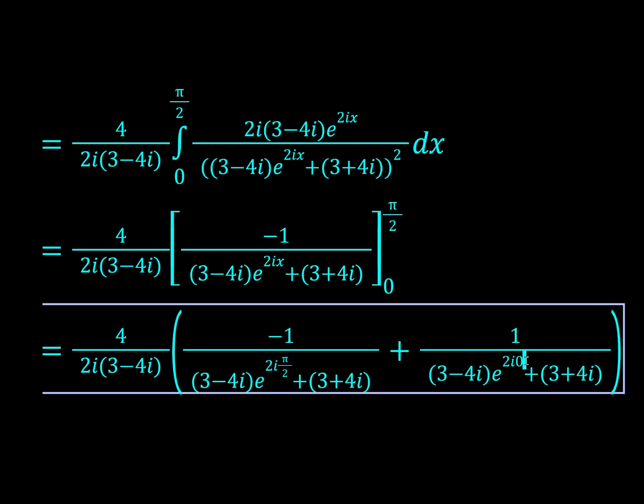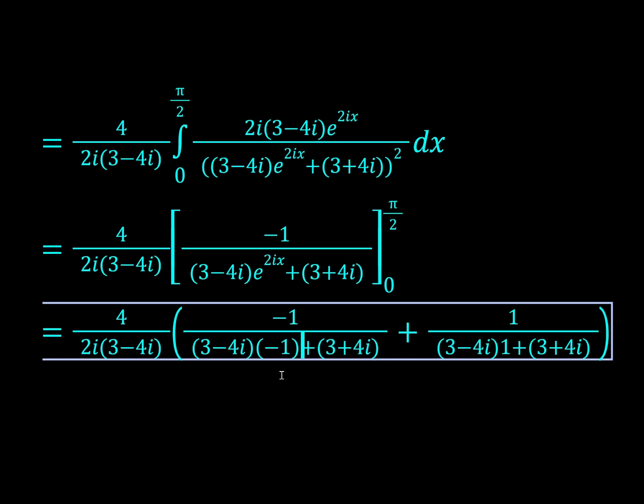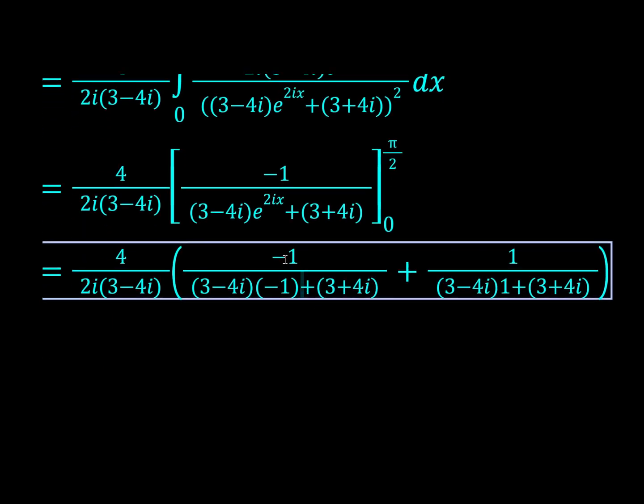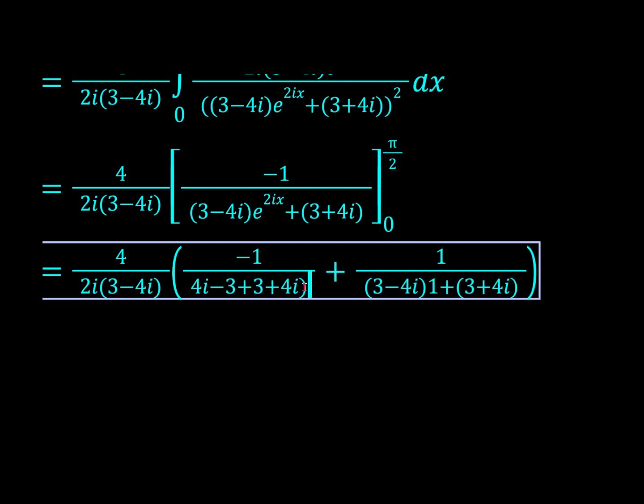it's going to be minus 1 over this thing and plus 1 over this thing. So e^0 is 1 and this would be e^(iπ), right? And e^(iπ) is minus 1. Nice. So now we just have to manipulate this a bit. So 4i - 3 and this is 3 + 4i.